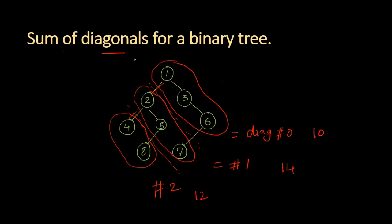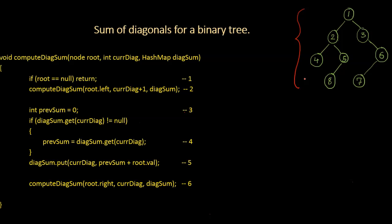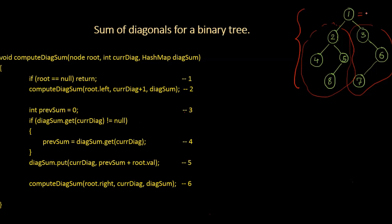Let us now look at the approach to solve this problem. The main idea is to do an in-order traversal with a slight modification. By in-order traversal, I mean first compute the diagonal sum for the left subtree, then add the root node's value to the current diagonal sum, and finally do the computation for the right subtree. The slight modification is that we will keep track of the diagonal that each node is in. So node 1 is at diagonal 0, node 2 is at diagonal 1, node 4 is at diagonal 2, and so on.